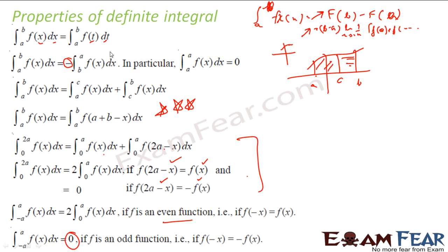To recap: the integral from a to b of f dx equals the integral from a to b of f dt — any variable gives the same result. The integral from b to a of f dx is minus the integral from a to b of f dx. The integral from a to b equals the integral from a to c plus c to b of f dx. The critical formula: the integral of f(x) dx from a to b equals the integral of f(a + b − x) dx from a to b. The integral from 0 to 2a of f dx equals the sum formula, giving twice the integral from 0 to a if f(2a − x) equals f(x), or 0 if f(2a − x) equals minus f(x). And the integral from −a to a of f dx equals 2 times the integral from 0 to a if even, and 0 if odd.